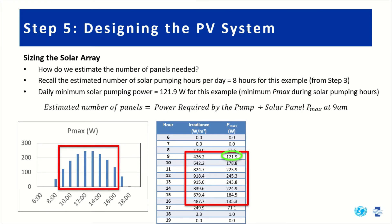In this case the lowest value of Pmax within the highlighted range is 121.9 watts. We then take the total power required by the pump and divide it by Pmax at 9am — circled in green — to get the estimated number of panels. The power required by the pump, determined from the pump curve in step four, is 1100 watts. Dividing 1100 watts by 121.9 watts gives us approximately nine panels.